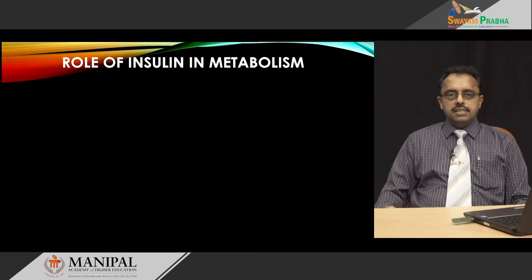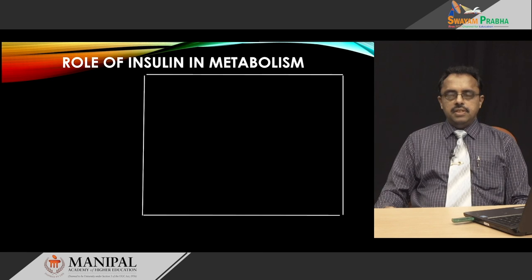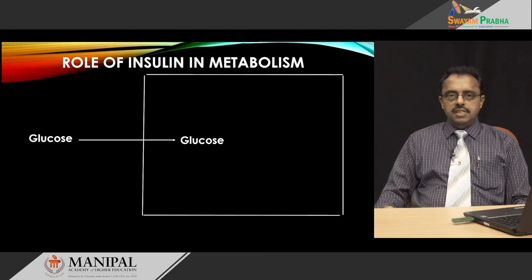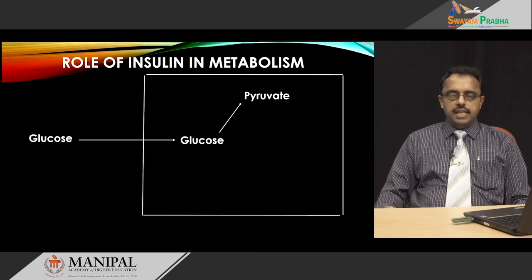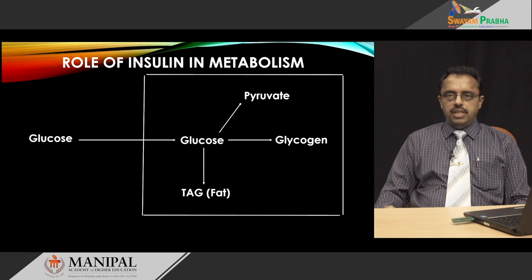In order to understand the screening, diagnosis and monitoring of diabetes, we need to have a background about the basic biochemistry of the hormone called insulin. Insulin is a hormone secreted by the beta cells of the pancreas whenever the blood glucose levels rise after a meal. When blood glucose levels increase, glucose can enter into most cells. For example, in a liver cell, once it enters it will be oxidized to get energy through a pathway called glycolysis, which converts glucose to pyruvate. Excess glucose may be stored as a polysaccharide called glycogen, or the excess glucose can be converted to triacylglycerol, also commonly known as fat.